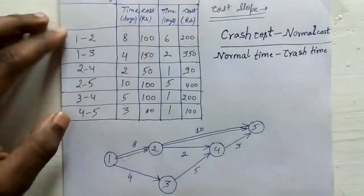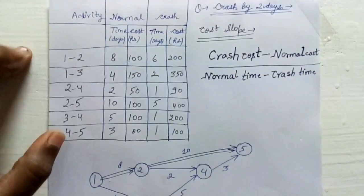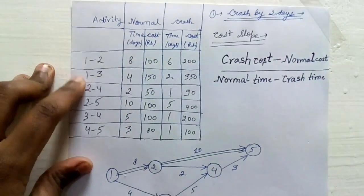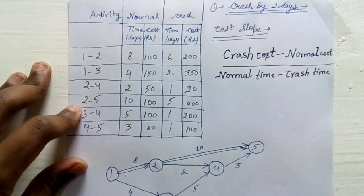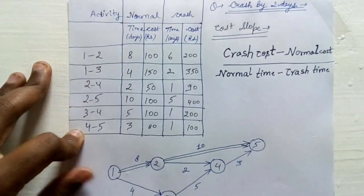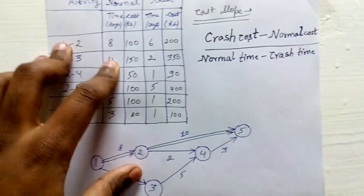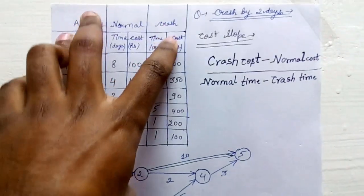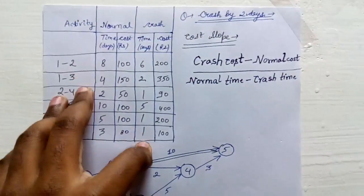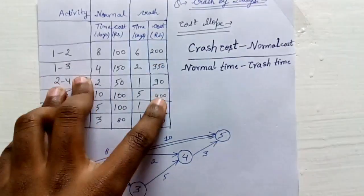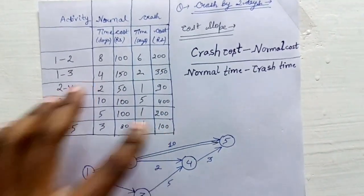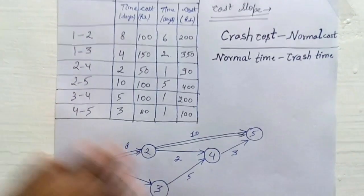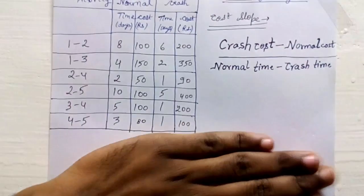Now this is the question. The activities given are: 1-2, 1-3, 2-4, 2-5, 3-4, and 4-5. We have the normal time, the normal cost, the crash time, and the crashing cost. This table is given in the question. The network diagram I have drawn — you have to draw it yourself.